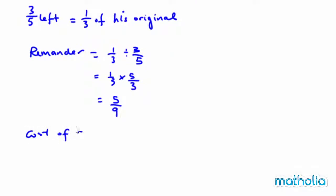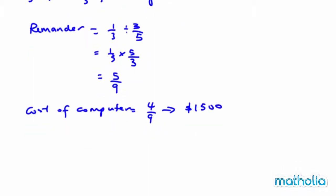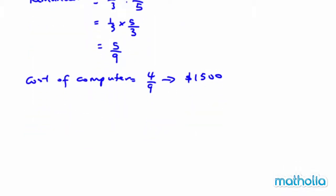Alright? So my remainder will be 4 over 9 and this is $1,500. With that information, I can now draw the model.